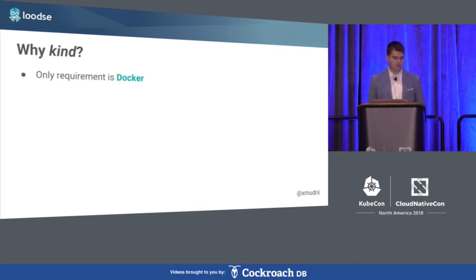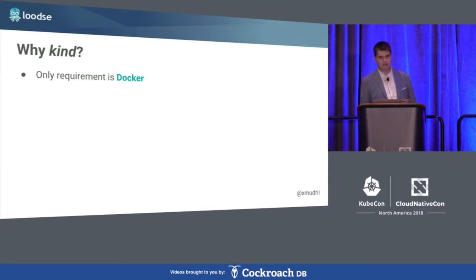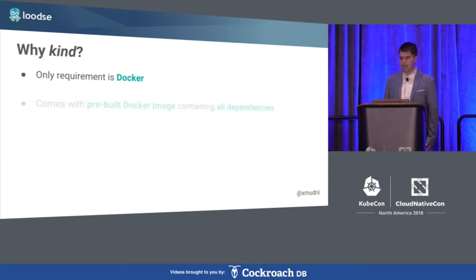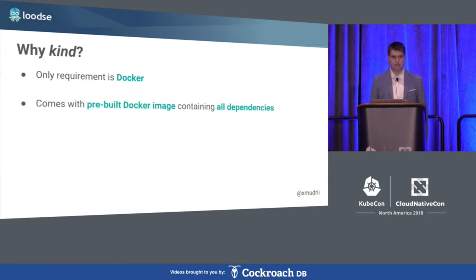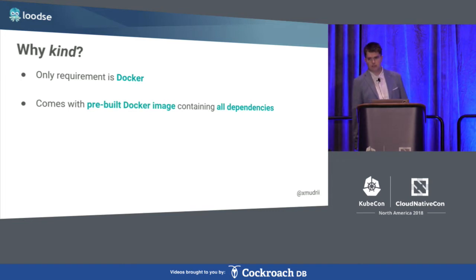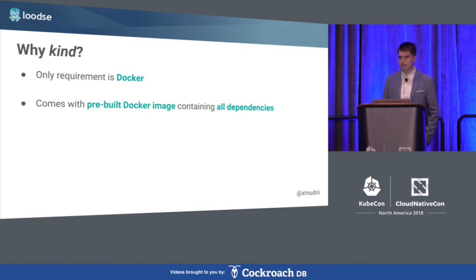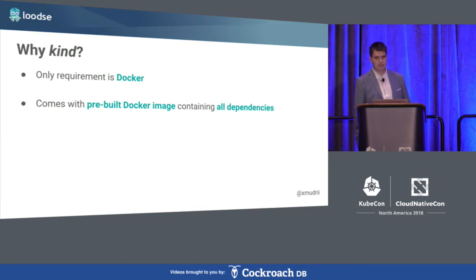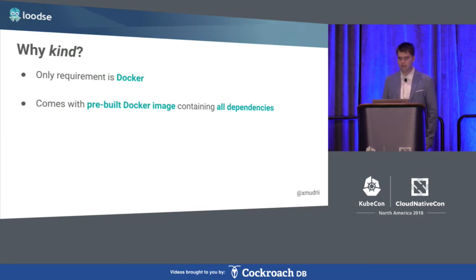Let's see why KIND. The only requirement for running KIND is Docker available on the machine. KIND comes with a pre-built Docker image, called the base image, which has all dependencies pre-configured, including systemd, Docker, and kubeadm.